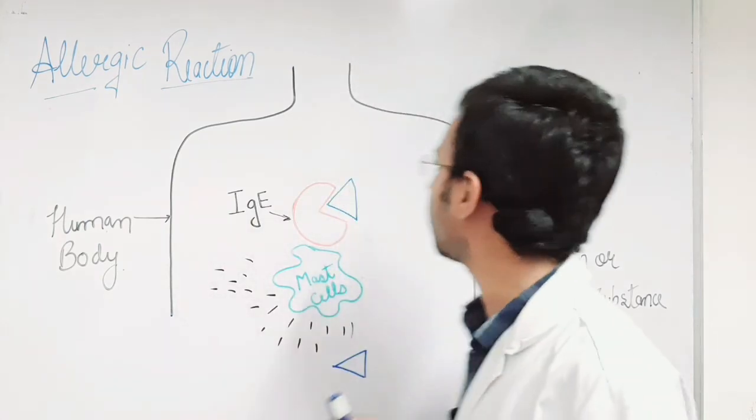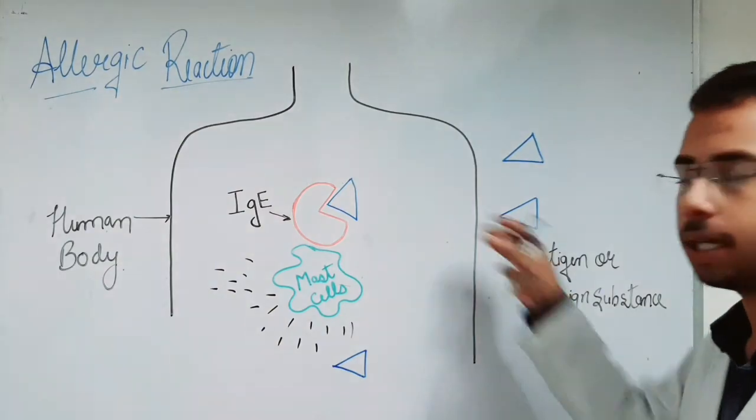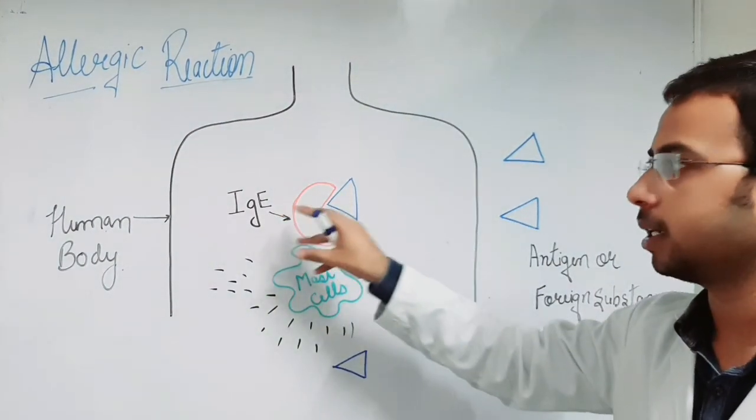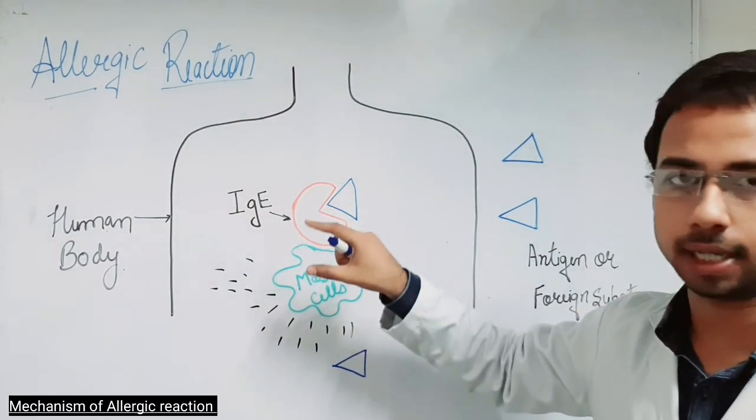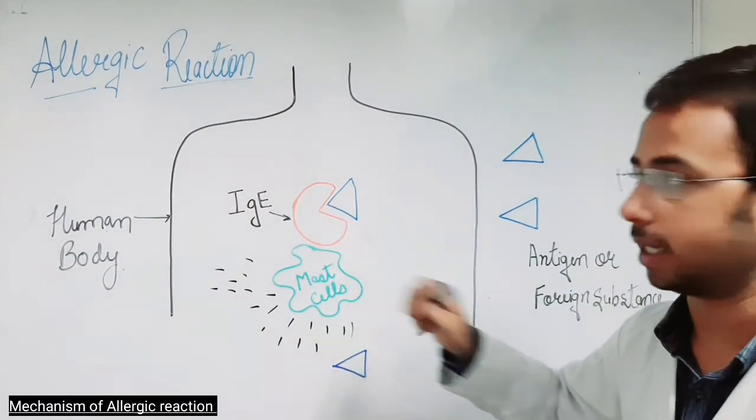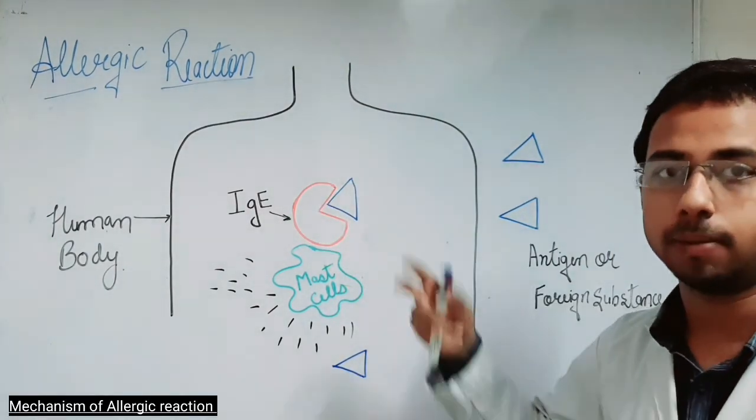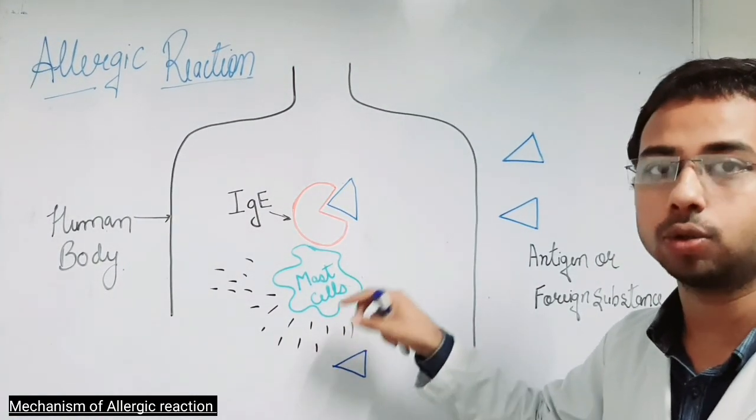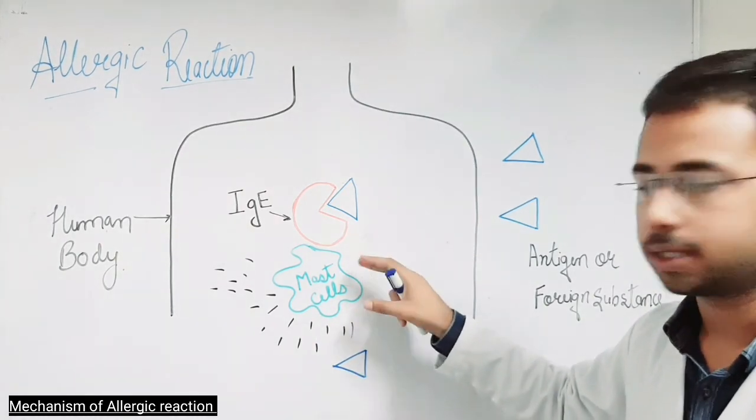When the foreign substances—the antigen—enter inside the human body, the immune system starts to act on them. The warriors of the immune system are the antibodies. When these antibodies, the specific antibody in the case of allergy is the IgA, bind to the antigen, then IgA antibody becomes activated and they start to accumulate some immune cells near it, such as mast cells.